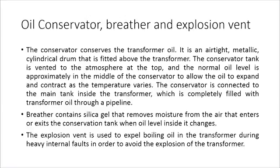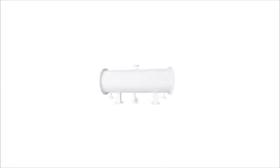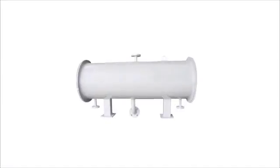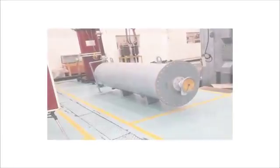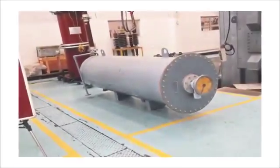The conservator conserves the transformer oil. It is an airtight metallic cylindrical drum fitted above the transformer. The conservator tank is vented to the atmosphere at the top, and the normal oil level is approximately in the middle of the conservator to allow the oil to expand and contract as the temperature varies. The conservator is connected to the main tank inside the transformer, which is completely filled with transformer oil, through a pipeline.